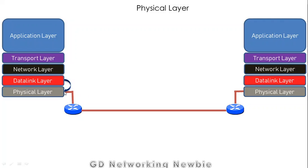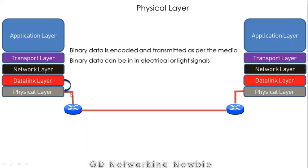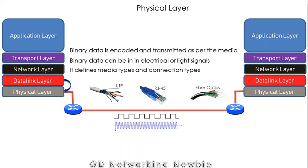The final layer is the physical layer. The data link layer hands data to the physical layer, whose job is to convert that data into binary form and then transmit it to the destination according to the medium. For example, if the medium is UTP cable, the binary data is transmitted as electrical signals; if it is optical fiber, then as light signals. These signals can be analog or digital. The physical layer also defines the media types and connection types.